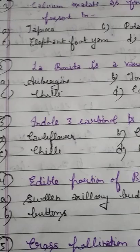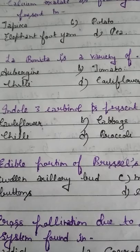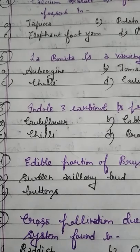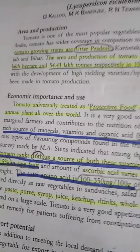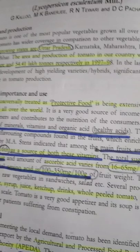Question number 2 is again very important. La Bonita is a famous variety of which of the following crop? Option A: Aubergine. Option B: Tomato. Option C: Chili. Option D: Cauliflower. La Bonita is a famous variety of tomato.